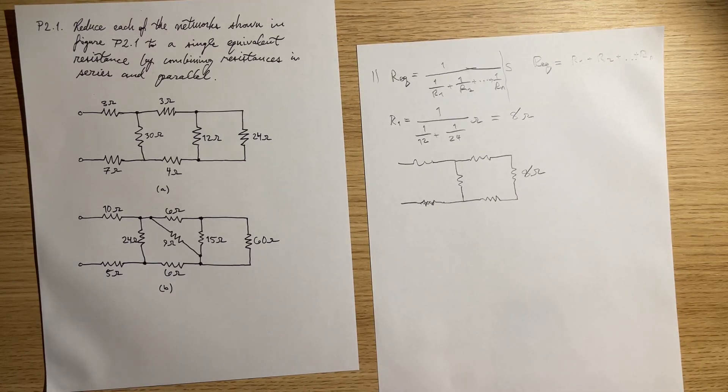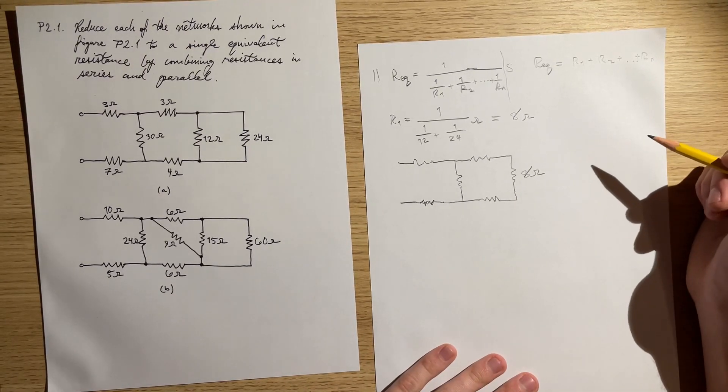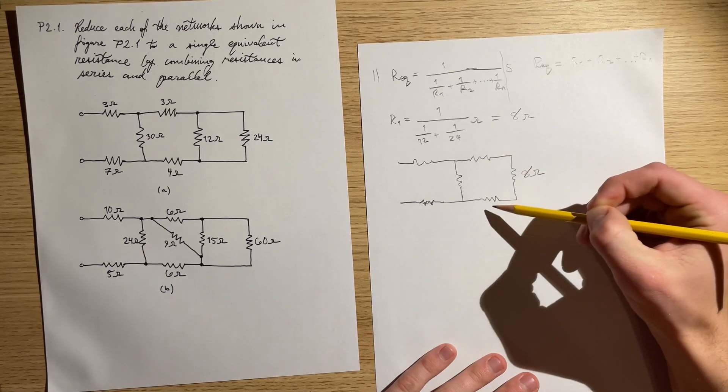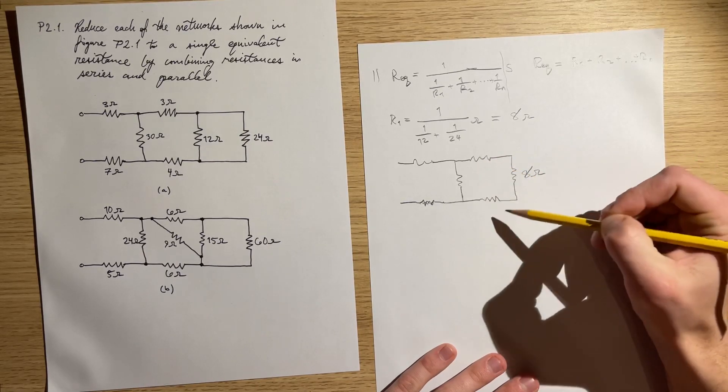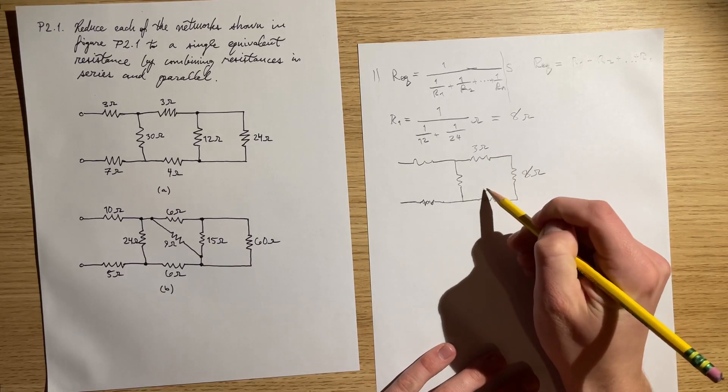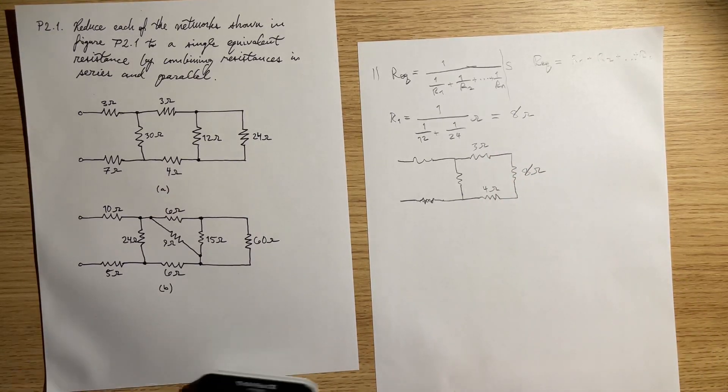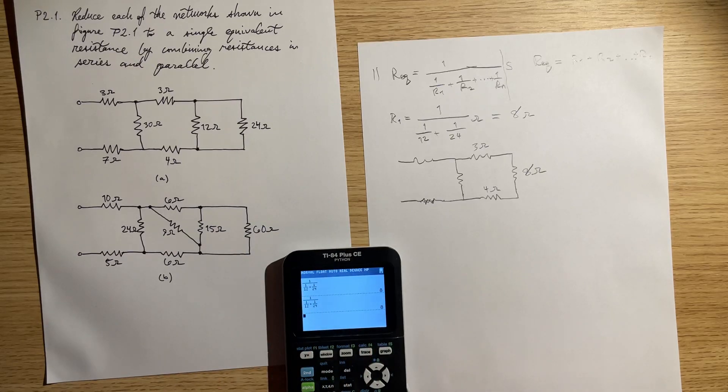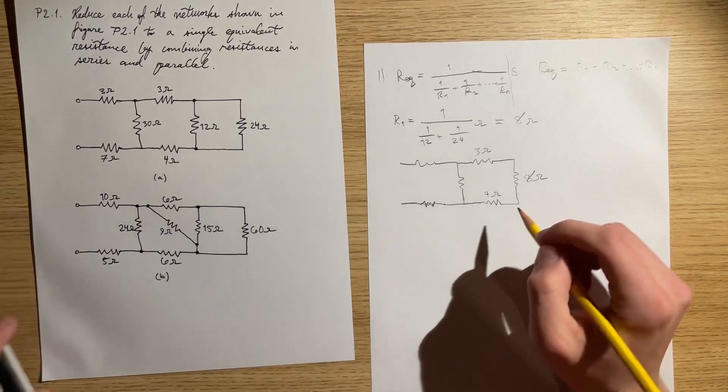Now what we can do is simplify it further. These are in series right here, so we can just add these three together. This one being 3 ohms, this one being 4 ohms. Calculator again: 3 plus 4 plus 8 is 15 ohms.